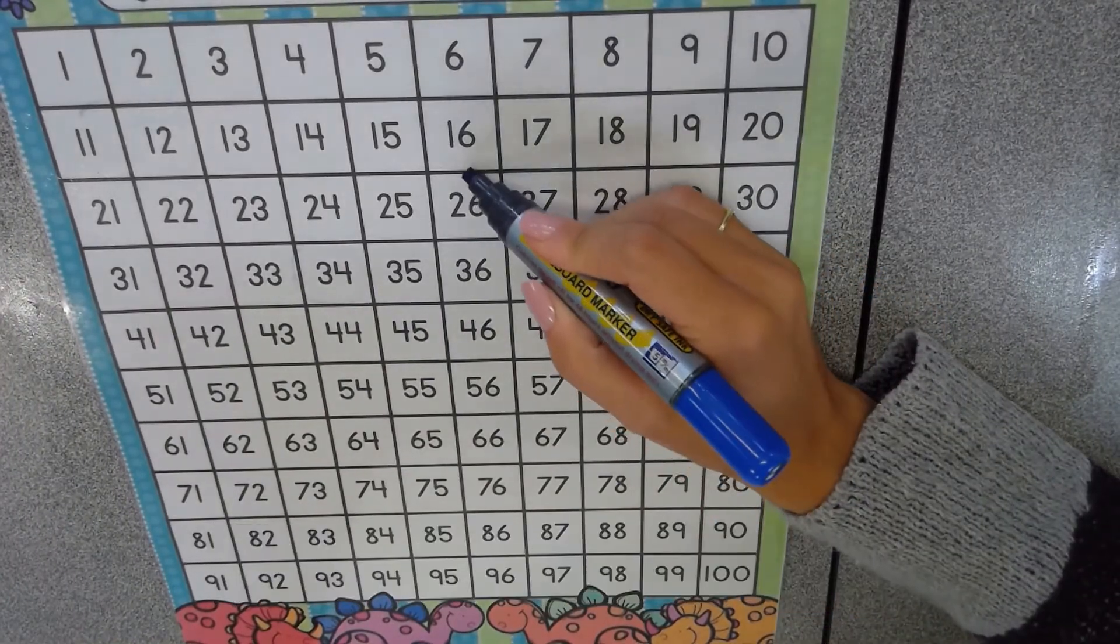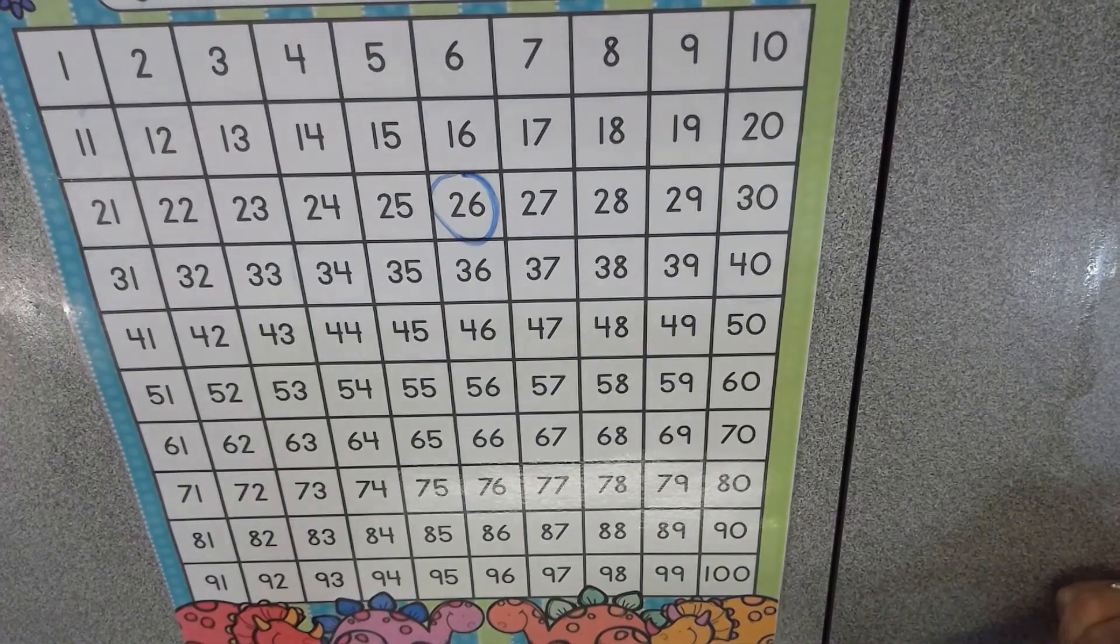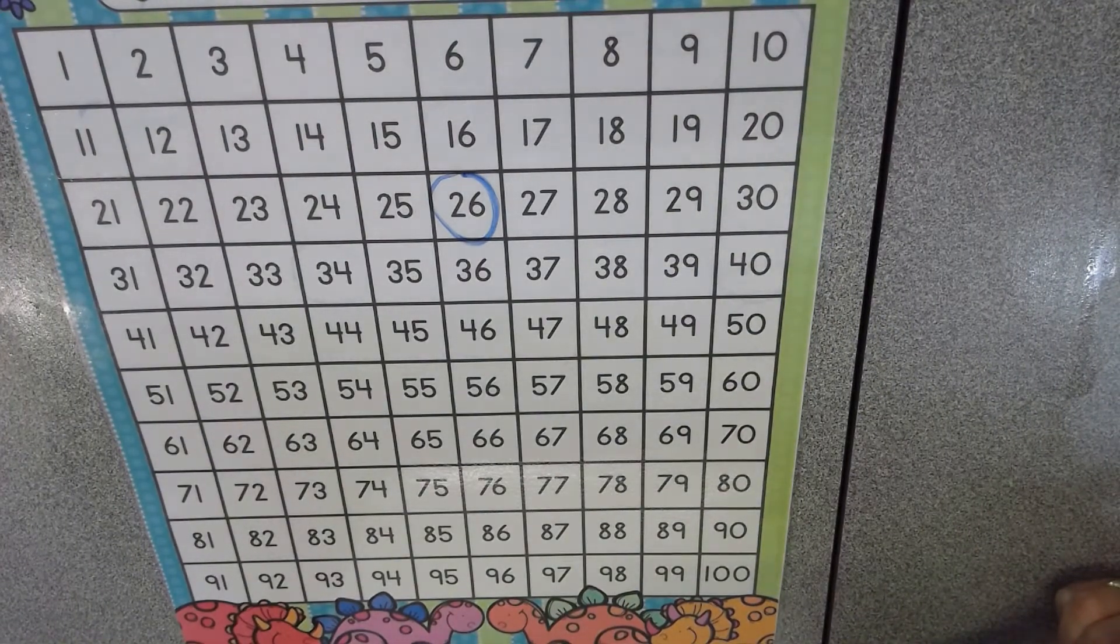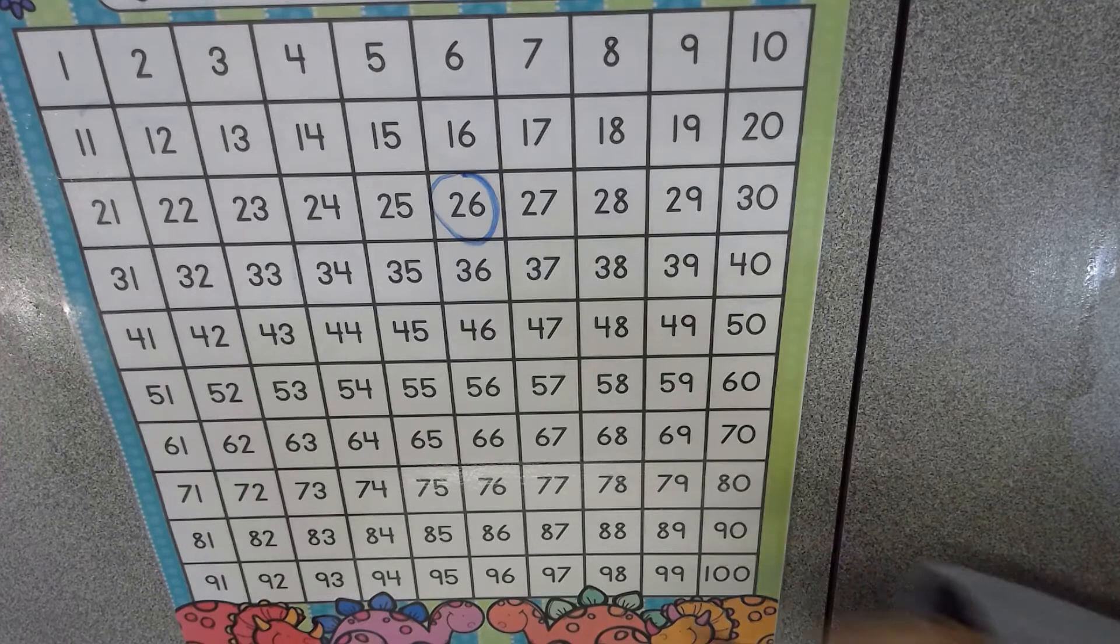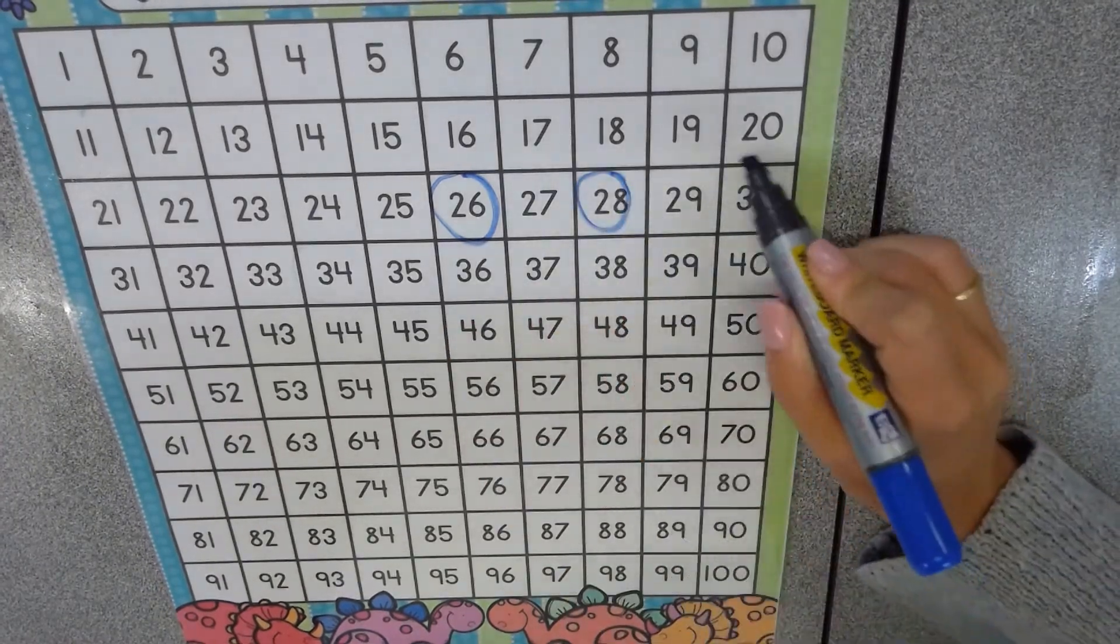So if I were to select the number 26, I should be able to continue counting by twos following the pattern. Six, eight, zero.